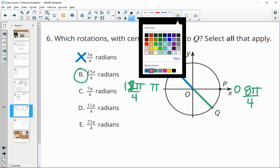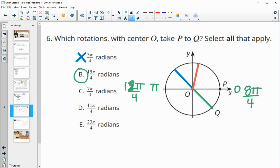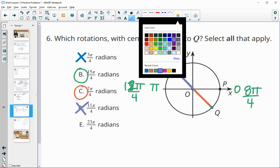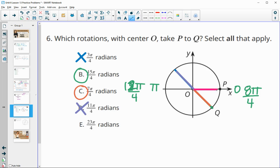D is 11 pi over 4. So we're at 4, 8, 9, 10, 11 pi over 4. So that one is not at Q. And then this final one is 23 pi over 4. So here we're at 8 pi over 4. Another rotation would be 16 pi over 4. 17, 18, 19, 20, 21, 22, 23 pi over 4 would also set us on Q.